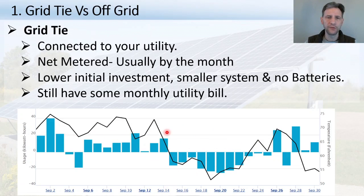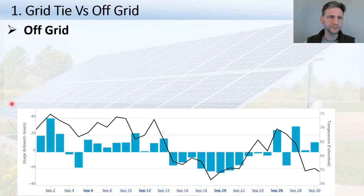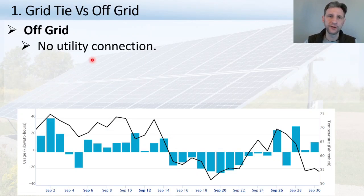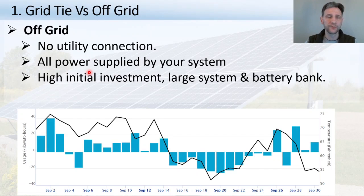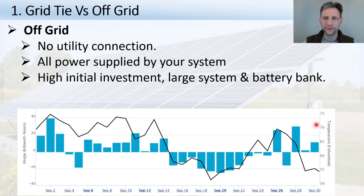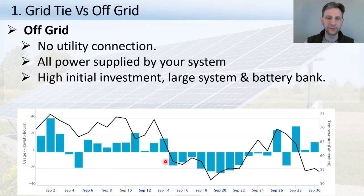In an off-grid system there are no utility connections, so if your system goes down you have no power. If you need to consume more than you're producing or what your batteries have stored, you're unable to do that. All power is supplied by your system. Looking at my graph, there are several days in a row where I'm consuming more than I'm producing — I would need a battery that could last half the month to cover those periods.